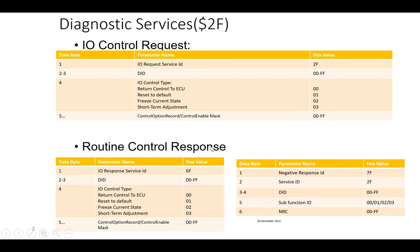For a positive response, 0x40 is added to 0x2F giving 0x6F, followed by the DID (2 bytes), the sub-function, and the control option record or enable mask. For a negative response, the response ID is 0x7F, followed by service ID 0x2F, the DID, the sub-function, and the NRC.